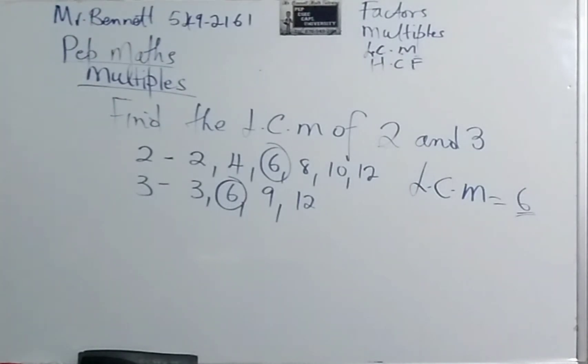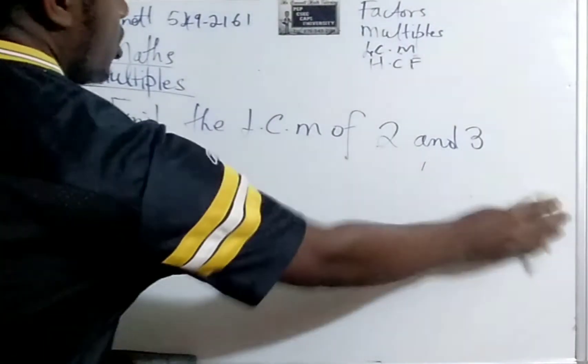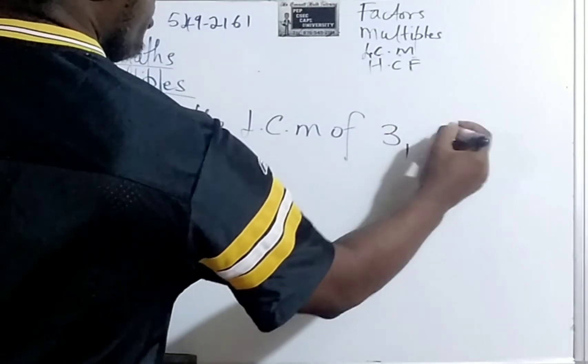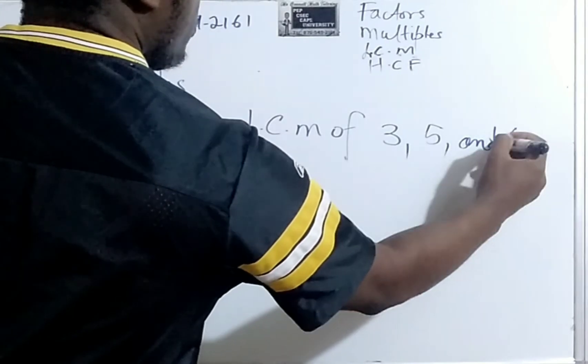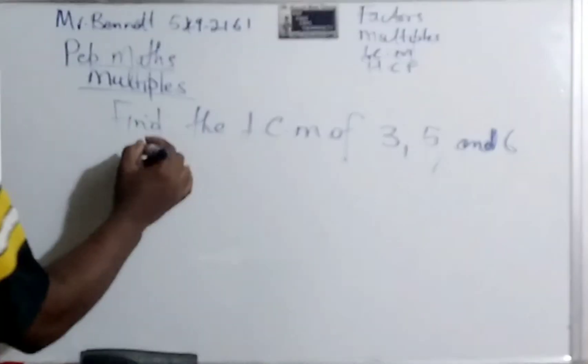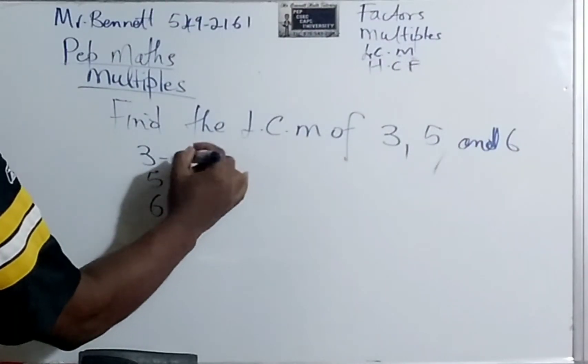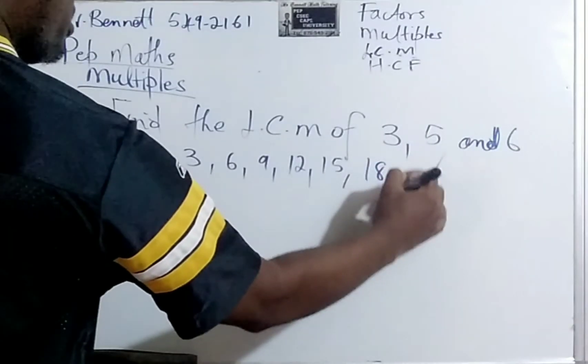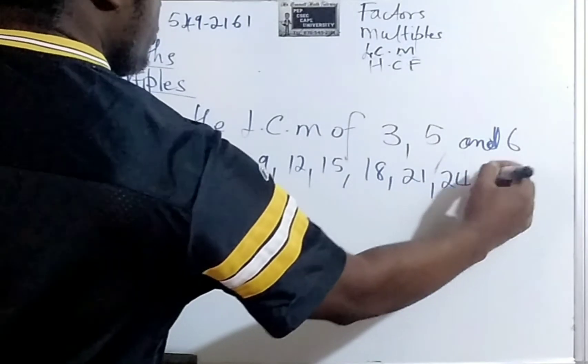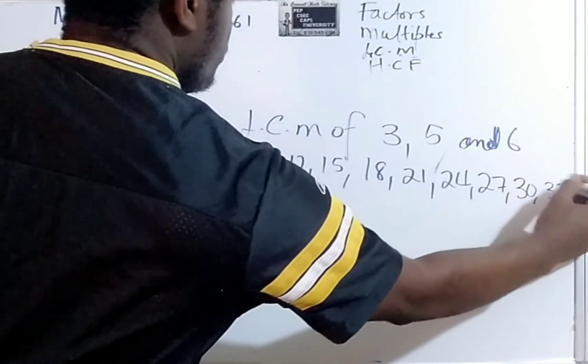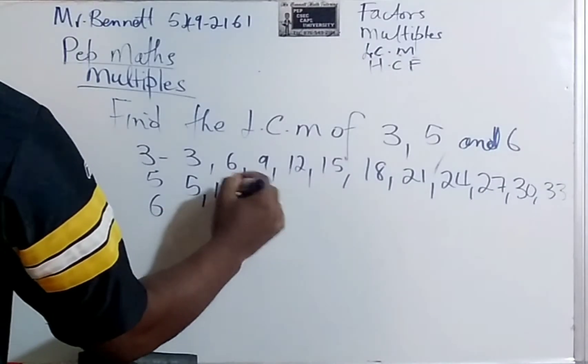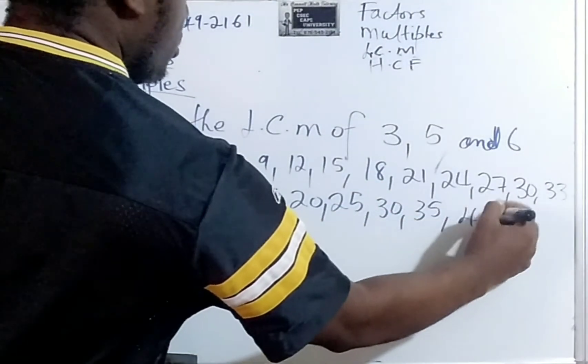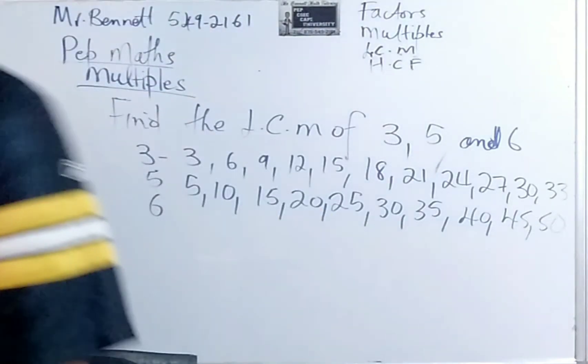All right, let us look at another one. This time, we are going to look at 3 numbers. Not just 2, but 3 numbers. So we are going to find the LCM of 3, 5, and 6. Same procedure. 3, 5, 6. So we go by 3. Each time, we keep adding 3. 3, 6, 9, 12, 15, 18, 21, 24, 27, 30. Because remember, that is what multiple means. It is like you are multiplying. All right, let us examine this one now. 5, 10, 15, 20, 25, 30, 35, 40, 45, 50. Let's just stop there.